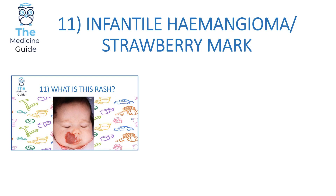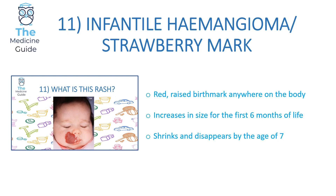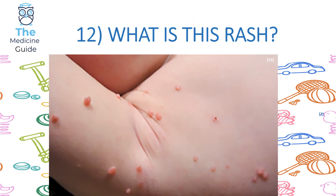Rash 11 is infantile haemangioma, also known as a strawberry mark. It is a red raised birthmark found anywhere on the body. It increases in size for the first six months of life and then shrinks and disappears by the time the child reaches age seven.